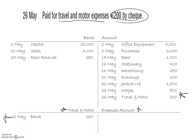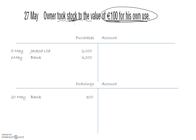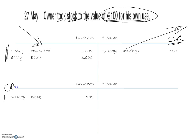27th of May: owner took stock to the value of 100 for his own use. Anything the owner takes for personal use is drawings. Stock implies goods bought in for resale — now taken by the owner — so this is an adjustment on the purchases account. The purchases account already has two transactions (5th and 6th of May); the drawings account has one (20th of May). When goods came in we debited purchases; now goods go out we credit the purchases account: 27th of May, drawings, 100. And we debit the drawings account: 27th of May, purchases, 100.